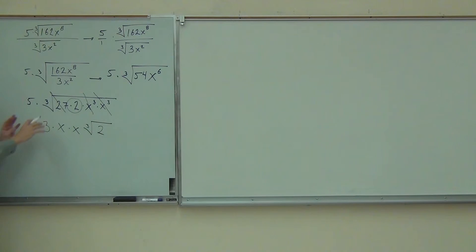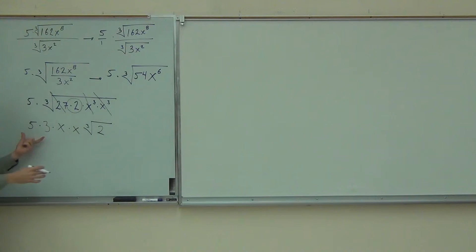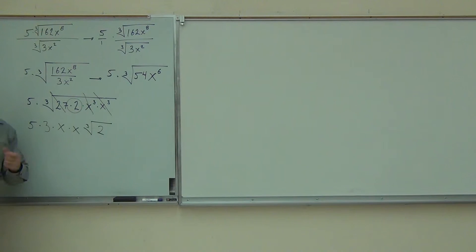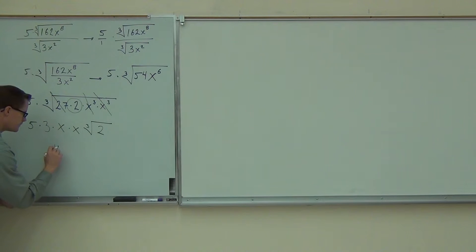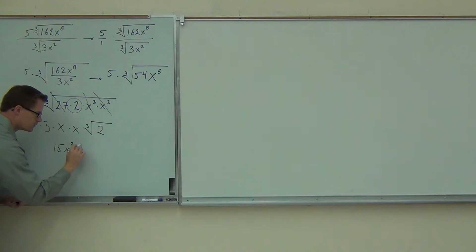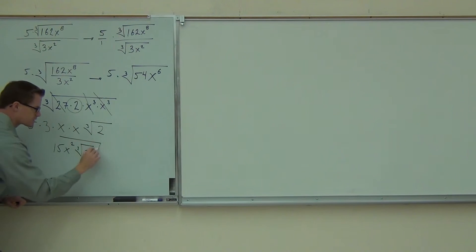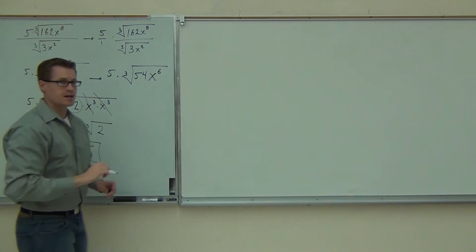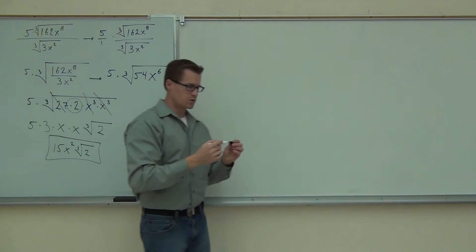Can I make this any prettier? Just combine. That's 5 times 3 — I can make that into 15 — times x times x is x squared. That's going to be x squared. I certainly don't want to forget that's a cube root, and there's only a 2 inside. So our answer is 15x squared cube root of 2.